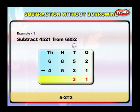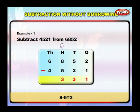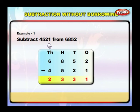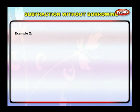Subtracting hundreds: 8 hundreds minus 5 hundreds is equal to 3 hundreds. We write 3 under the hundreds column. Subtracting thousands: 6 thousands minus 4 thousands is equal to 2 thousands. We write 2 under the thousands column. Thus, 6852 minus 4521 is equal to 2331.